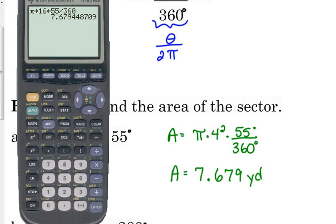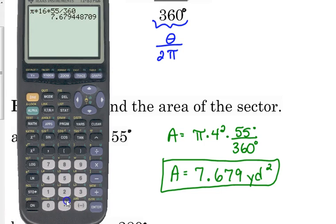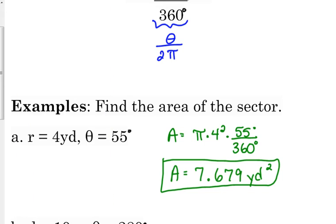My unit's yards. And let's see, your area would be yards squared. Area is always squared. Now, I encourage you to make sure that your answer makes sense. Compare that to the area of the entire circle. So 16 pi, the entire circle is about 50.3.